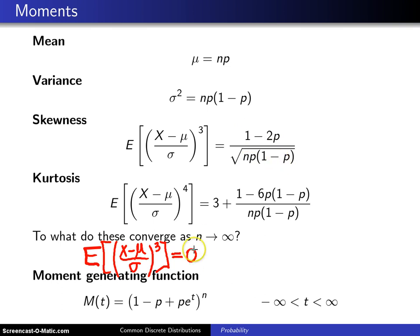Second one, the population kurtosis. That is the expected value of X minus mu over sigma raised to the fourth power. As n goes to infinity, this term right here vanishes for all p between zero and one, and you're left with a kurtosis of three.